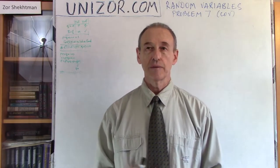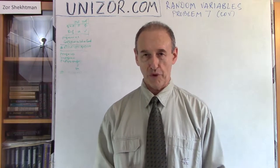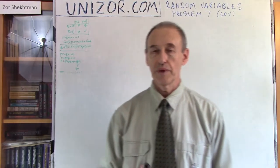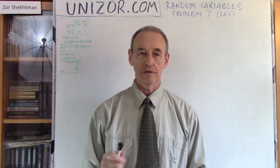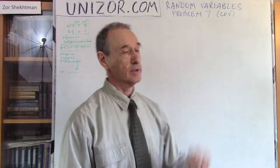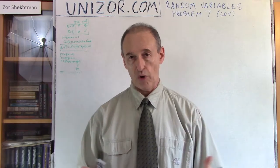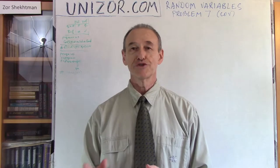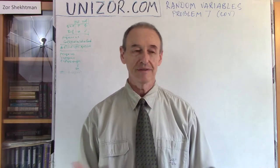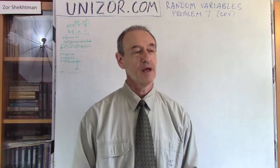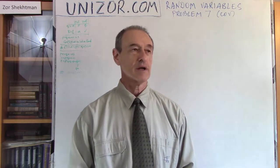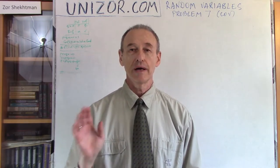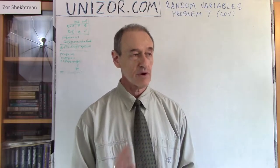As usual, I'm trying to encourage you to solve problems by yourself first. I do recommend you to go to unizor.com to this particular lecture — it's in probabilities and random variables, problem number seven. There is a problem as explained, and then there is a solution. Don't pay attention to the solution first; try to solve it. If you can't, then obviously go to the solution. And then listen to my lecture. After that, when you finish all that, just open a new sheet of paper and try to do everything by yourself. It's a very good exercise.